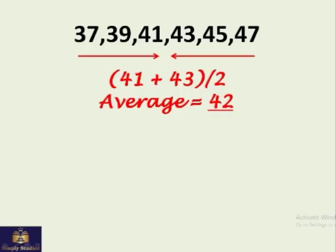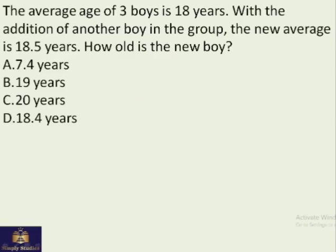So this was easy. Instead of adding them and dividing them by 6, which will also give you the same answer. Let's do another problem. The average age of three boys is 18 years. With the addition of another boy in the group, the new average is 18.5. How old is the new boy?